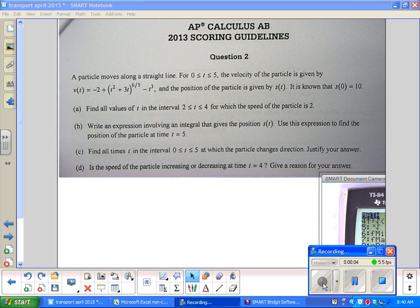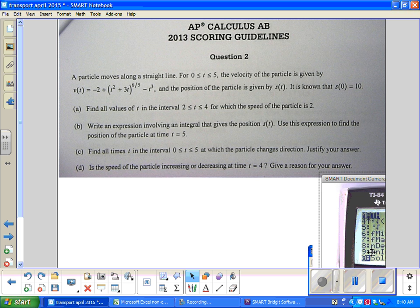Alright, 2013 AP Calculus free response questions, question two, calculator problem. A particle moves along a straight line from zero to five. The velocity of the particle is given by v(t) equals that function. It has a root component so it's a composite, but the bottom is odd so it's definitely continuous in the interval of zero to five. The position of particle is given by s(t) and they give you initial conditions. So obviously the fundamental theorem of calculus is coming here. At some point we're going to integrate v(t) using s(0) on this problem.